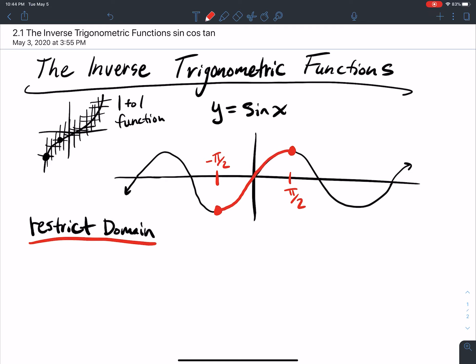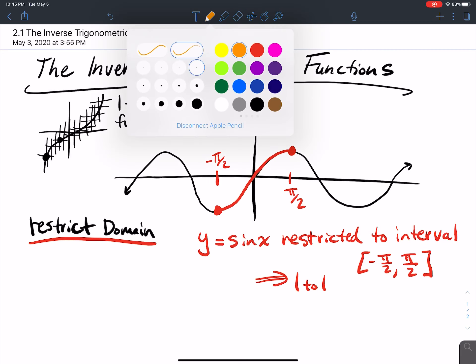Now, this portion of the graph, y equals sine x restricted to the interval negative pi over 2 to pi over 2, this is 1 to 1. Any vertical lines I draw only pass through it in one place. Any horizontal lines that I draw only pass through that red curve in one spot. So that is 1 to 1 there.